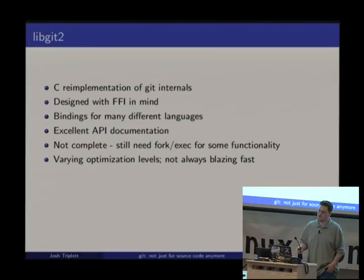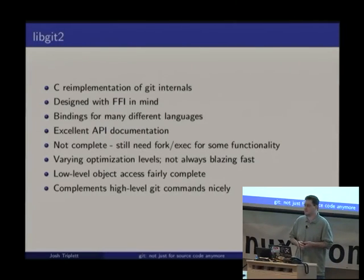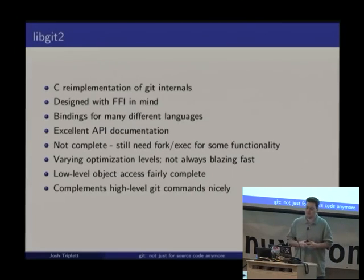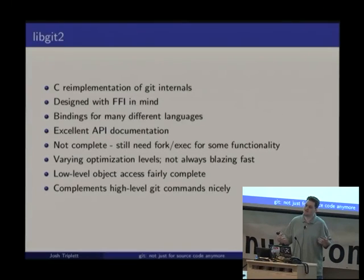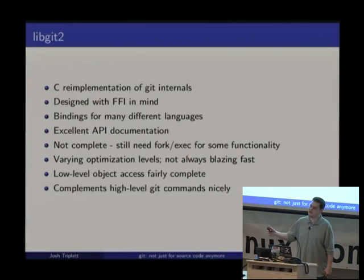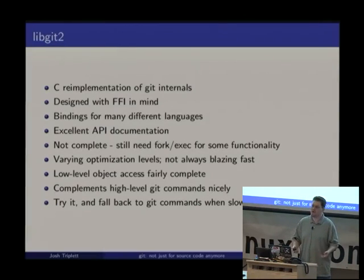The nice detail about libgit2 is that low-level object access for blobs, trees, commits, tags, and refs is extremely complete — it was one of the first things written — and that access is about as fast as it can be. This complements high-level Git commands nicely. My recommendation: use both — libgit2 for low-level object access and high-level Git commands via fork and exec where needed — and replace your use of fork and exec incrementally with libgit2 over time.